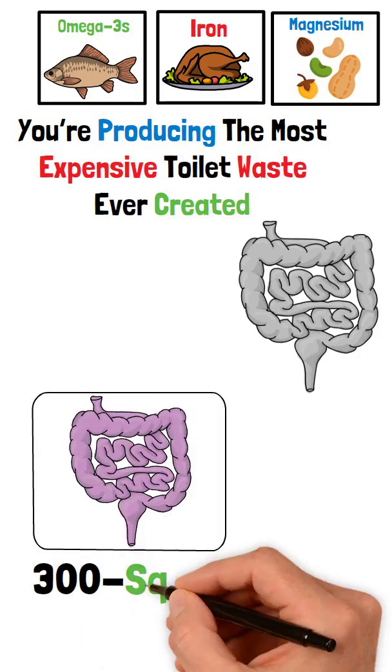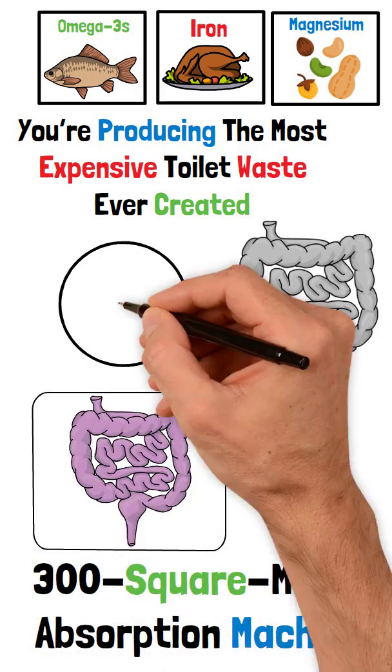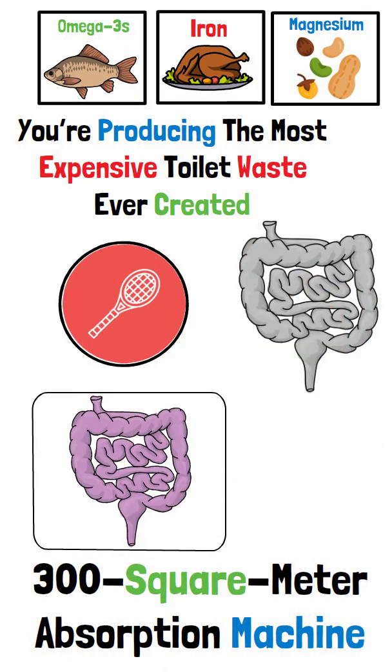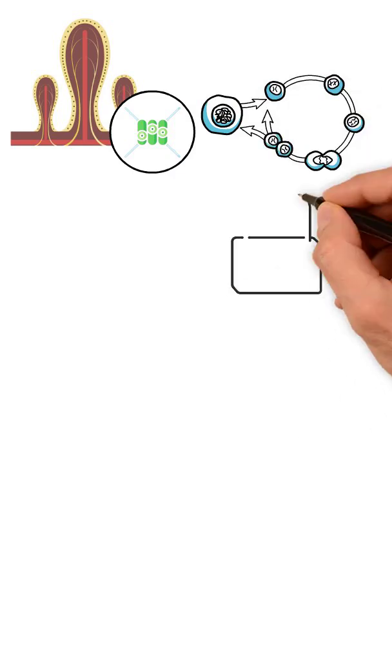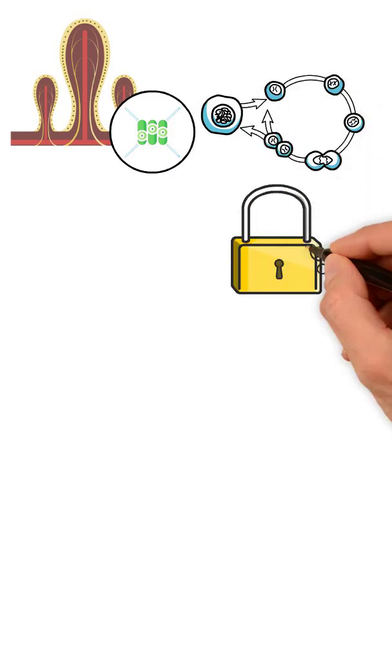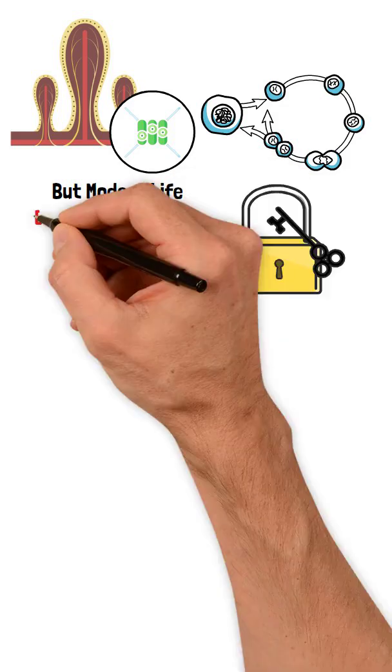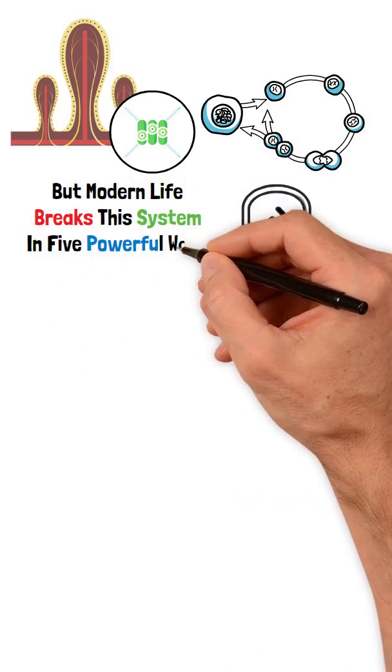Your small intestine is a 300-square-meter absorption machine, the size of a tennis court folded inside you. Lined with millions of villi and microvilli, and powered by hundreds of transporter proteins, each one a lock that fits a specific nutrient key. But modern life breaks this system in five powerful ways.